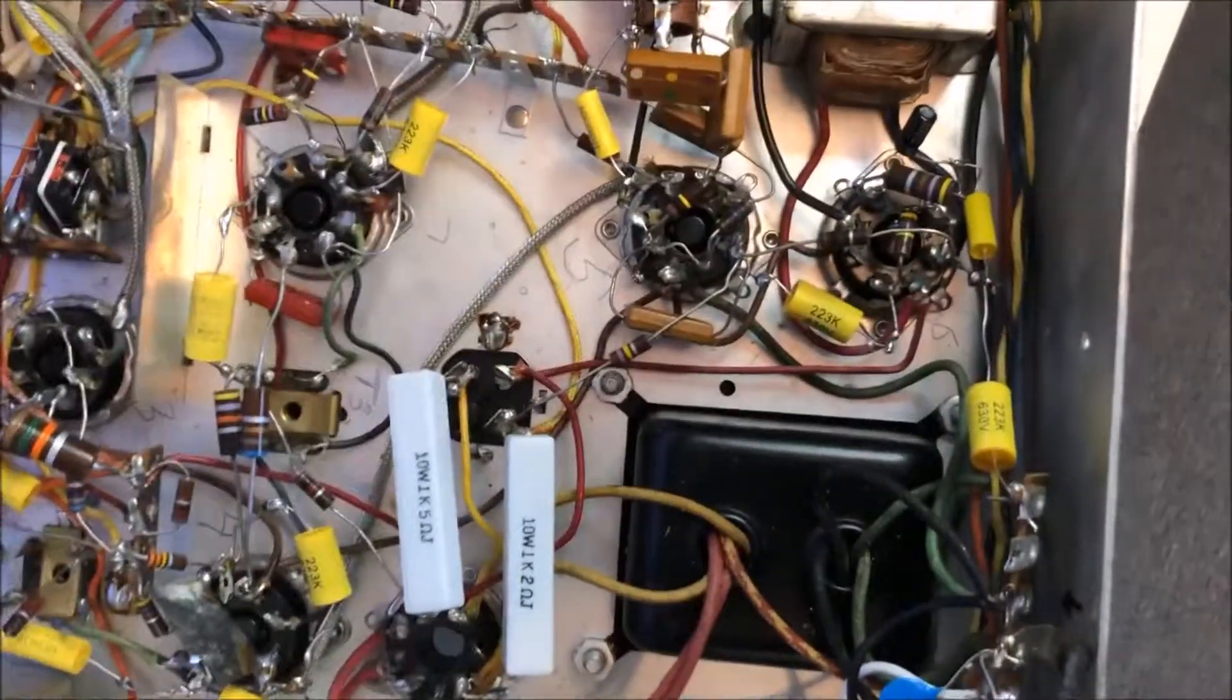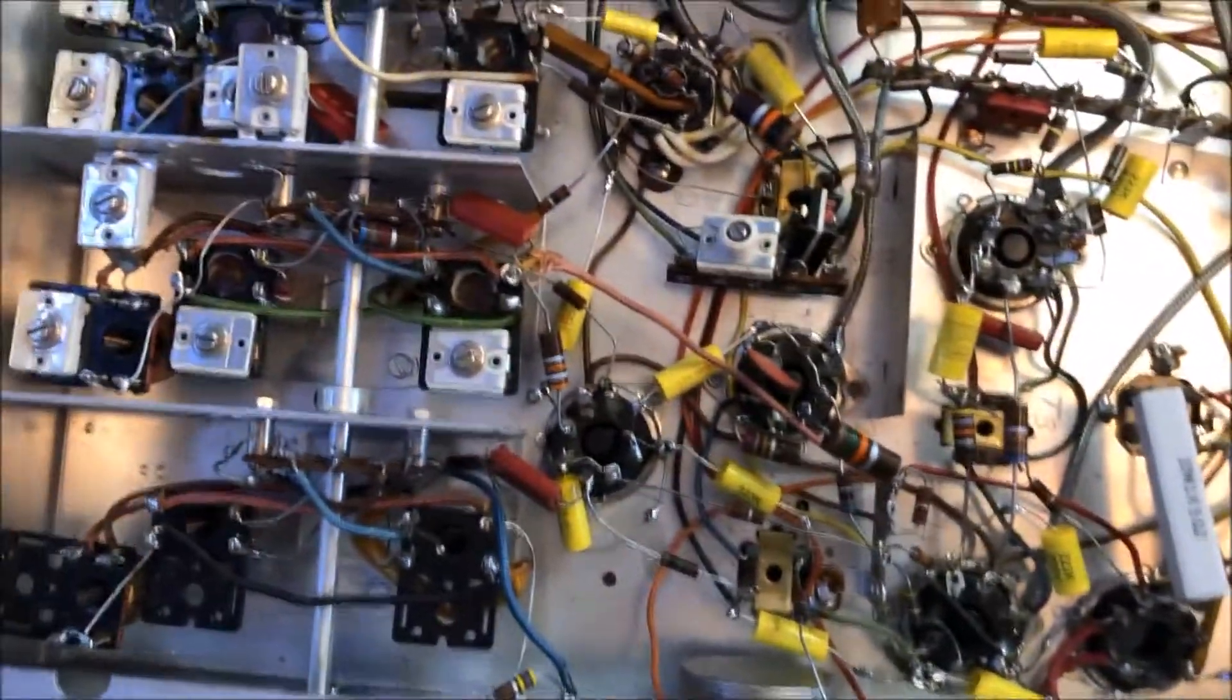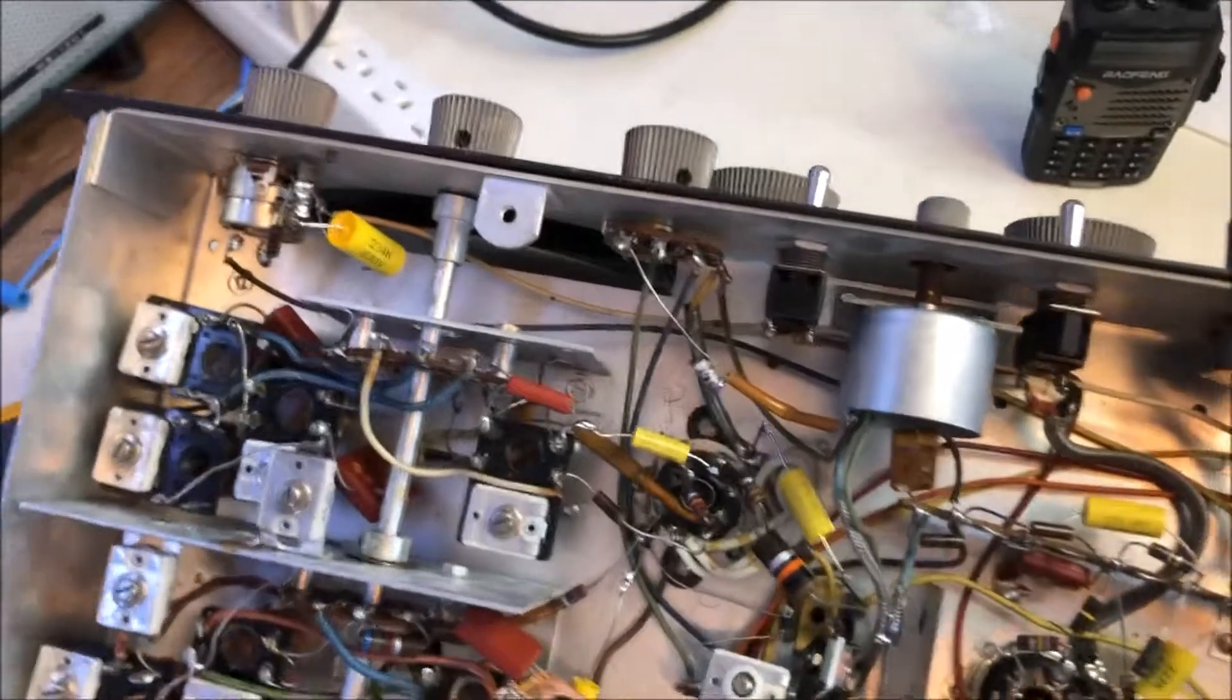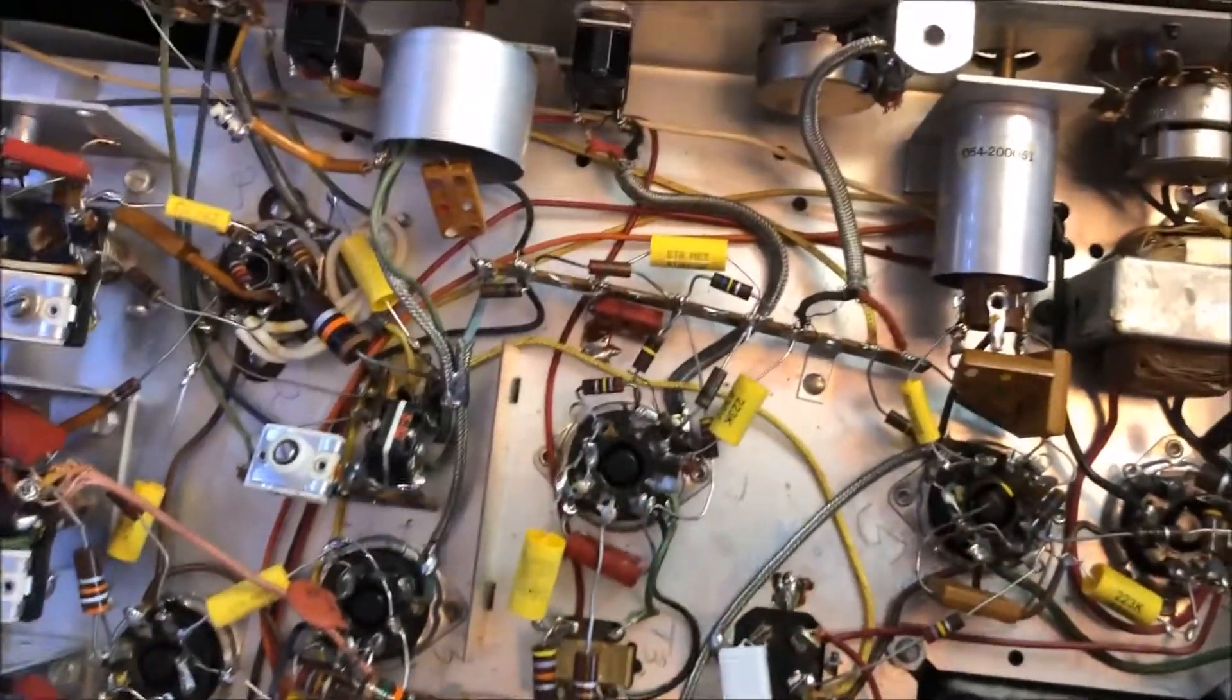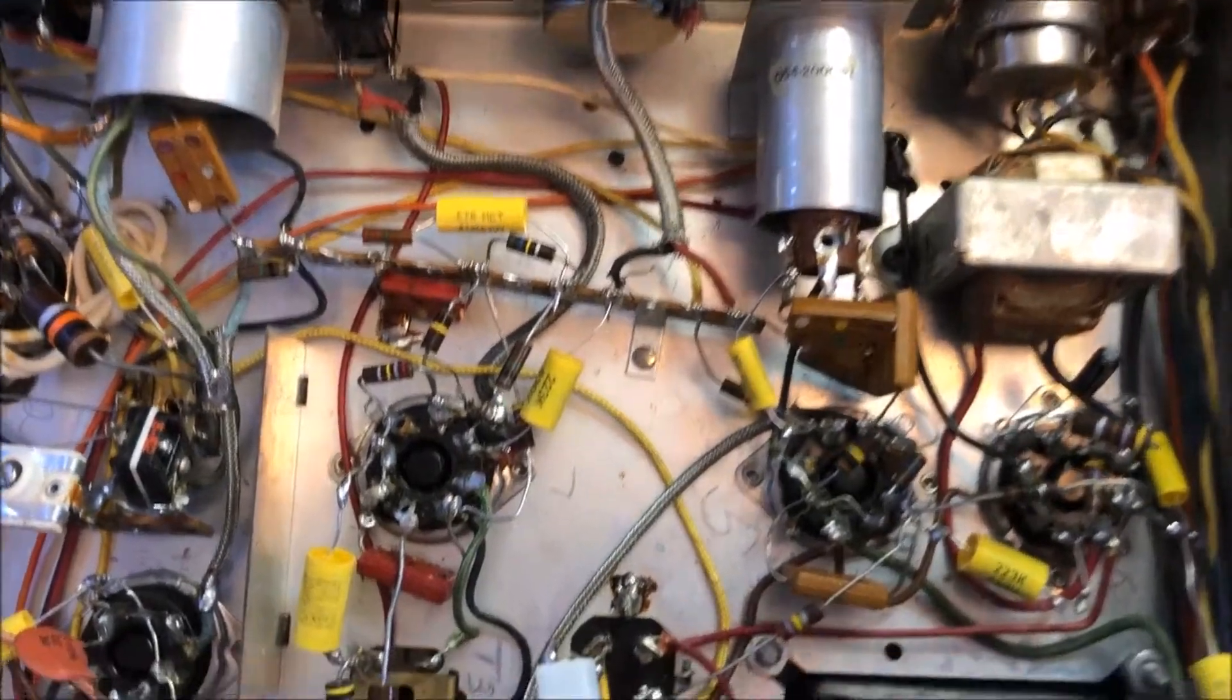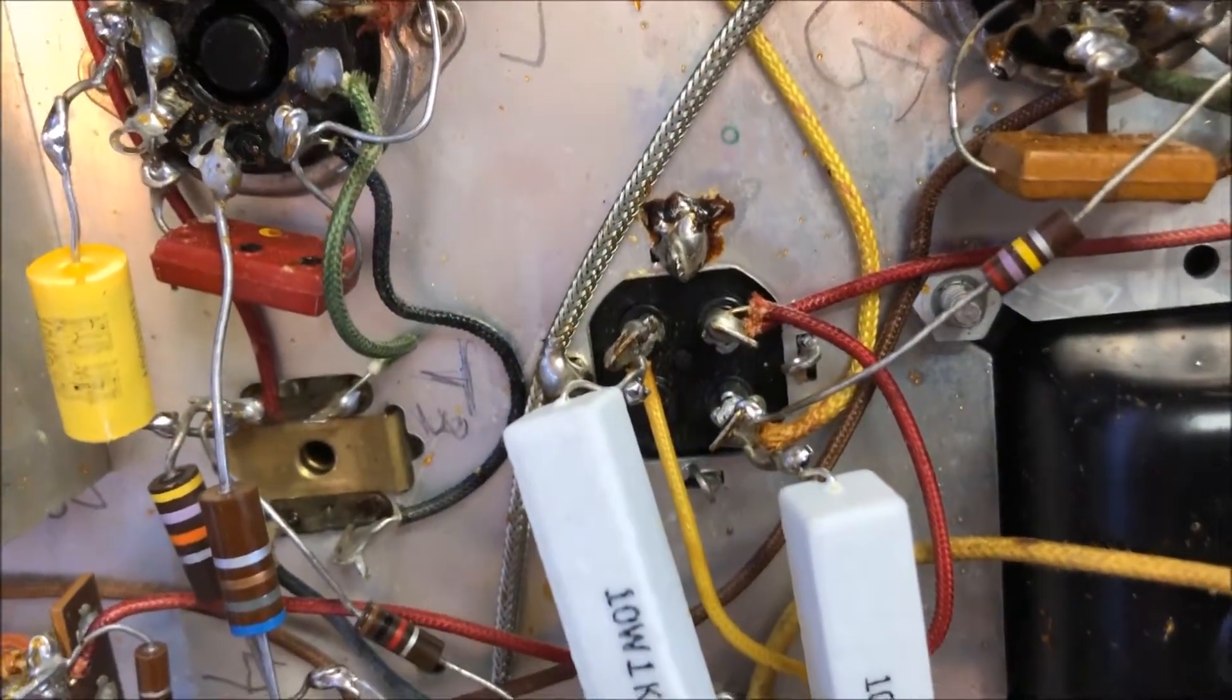I replaced all the capacitors, and the audio amp which had no voltage before is now working. But all the other voltages are way too high, like there's 70, 90 volts on the cathode. The only thing left to replace is that filter capacitor, the silver can.